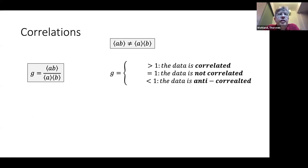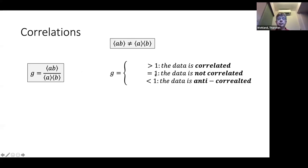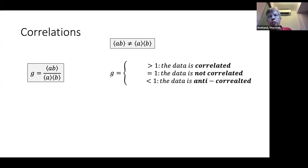We can define a correlation coefficient g, which is the ratio of the average of AB divided by the average of A times the average of B. If g equals one, the data is not correlated — that was when A and B randomly took any value. If g is larger than one, it's correlated — when A and B always had the same value. If g is smaller than one, the data is anti-correlated — when A and B always had opposite values.